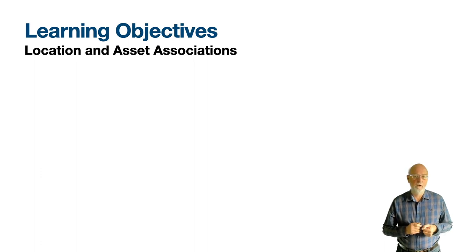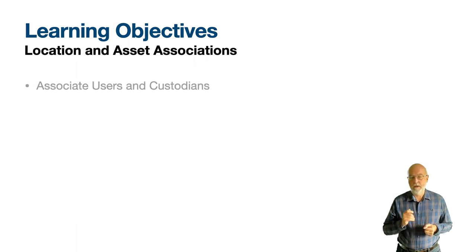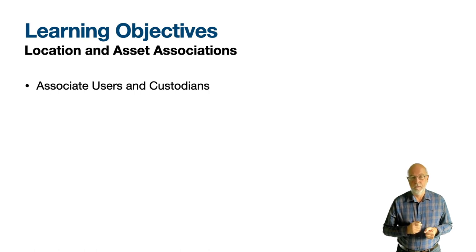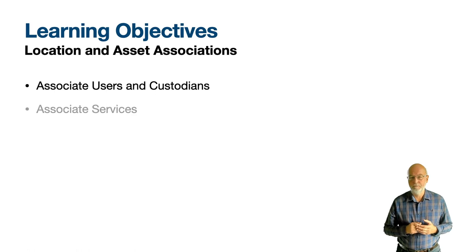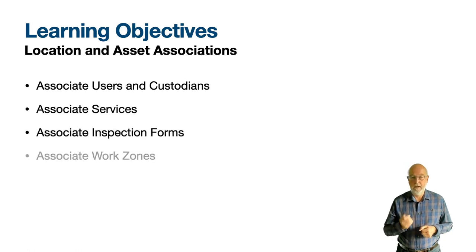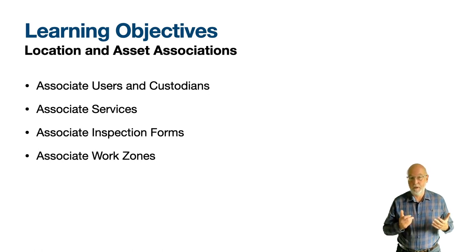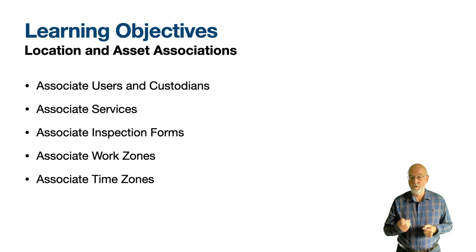We'll start by looking at the association of a location or asset with a person, and the action associate users and custodians. We'll then look at three associations which are sometimes used: associate services, associate inspection forms, and associate work zones. Finally, the one I have never come across but which may be more common in countries like USA, Canada and Australia — associate time zones.